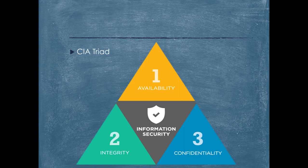Moving to point number two, which is integrity. Integrity means ensuring that the right person receives the data and that the data is received as-is in an unmodified state. While confidentiality ensures the right person receives it, integrity ensures additionally that the person receives it in an unmodified, unaltered state. Integrity involves maintaining the consistency, accuracy, and trustworthiness of data over its entire life cycle. Data must not be changed in transit or while sitting on disk, and steps must be taken to ensure data cannot be altered by unauthorized people.